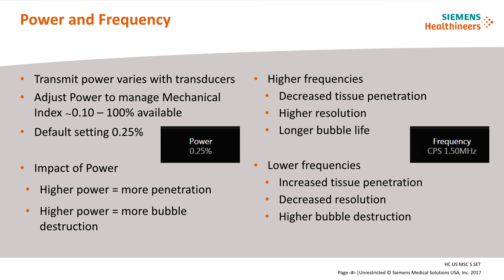Higher power equates to more penetration in the image; however, more bubbles are destroyed when the power is higher. Frequency also affects bubble life and tissue penetration. Lower frequencies give better tissue penetration but at the expense of bubble integrity. Higher frequencies result in longer bubble life but decreased penetration of the tissue.